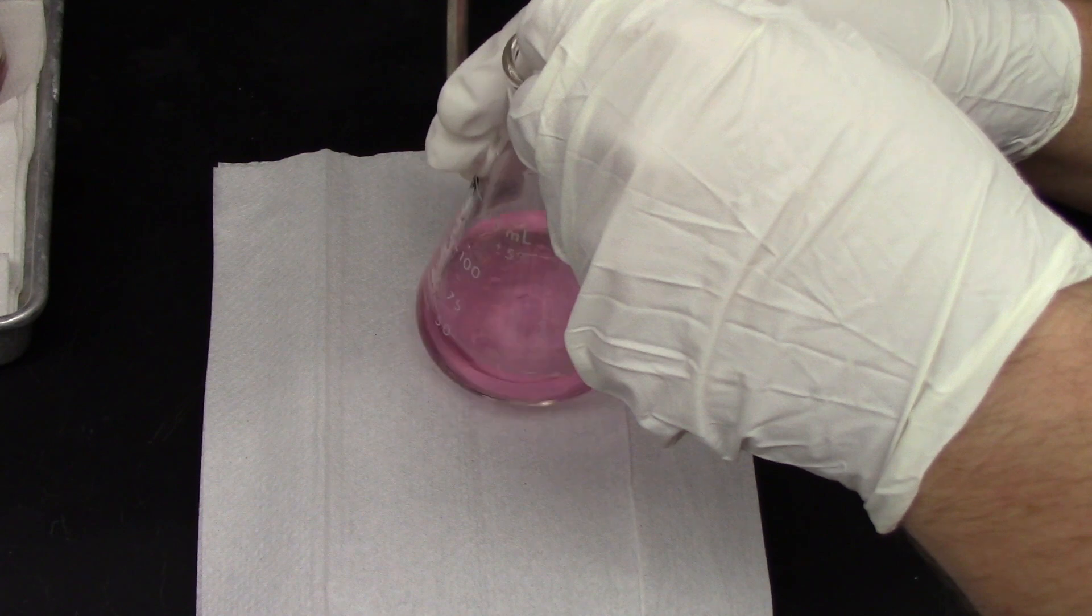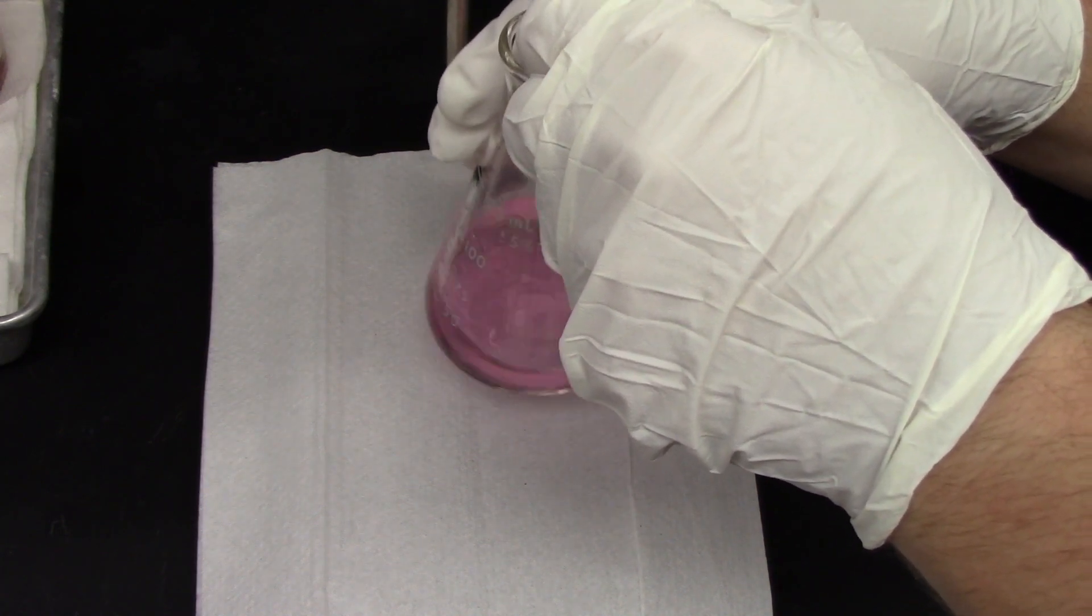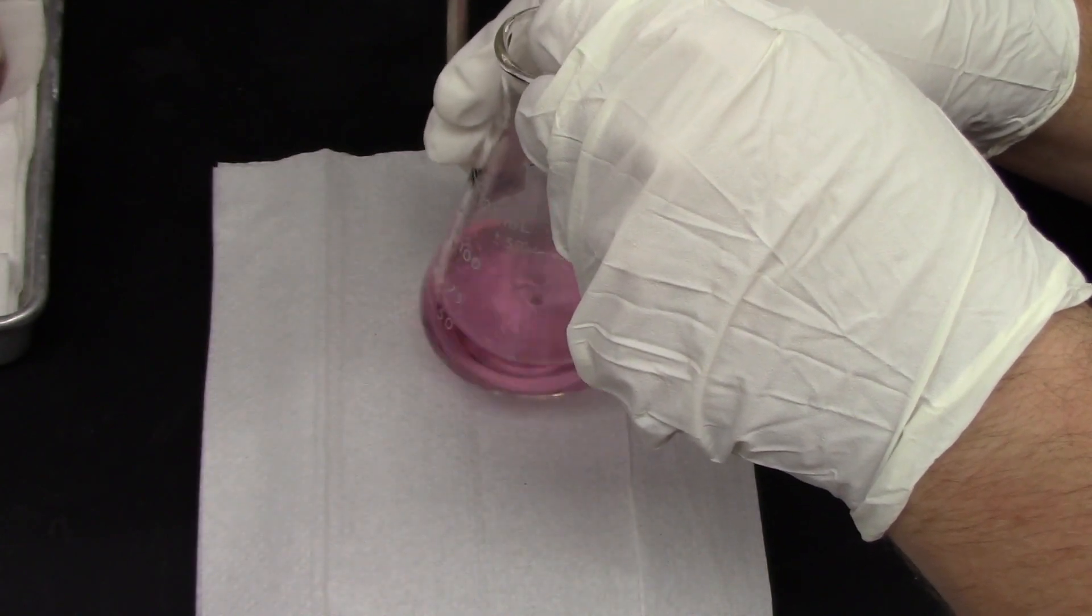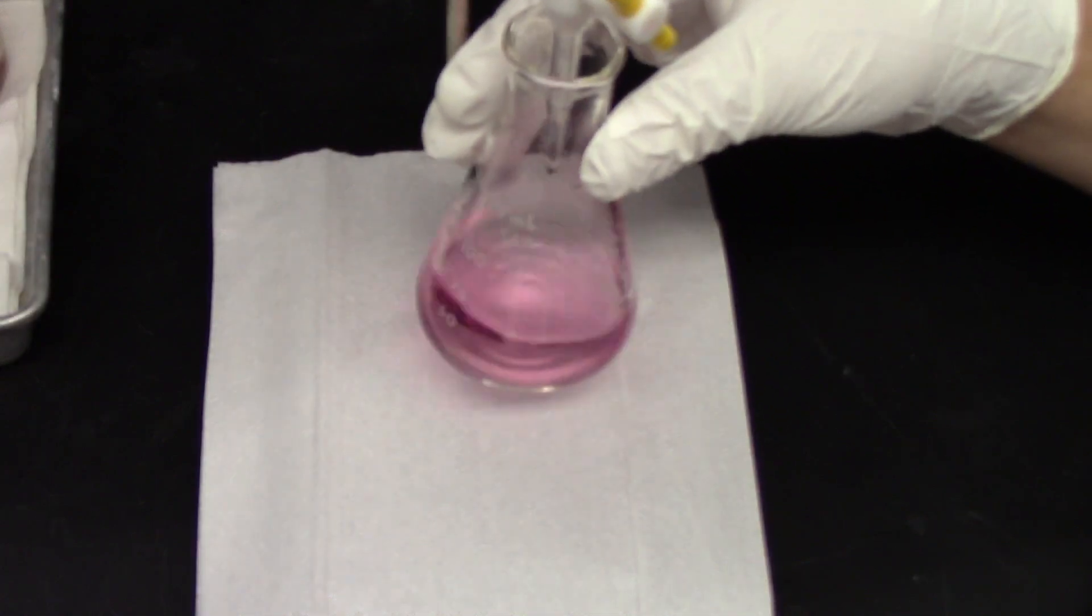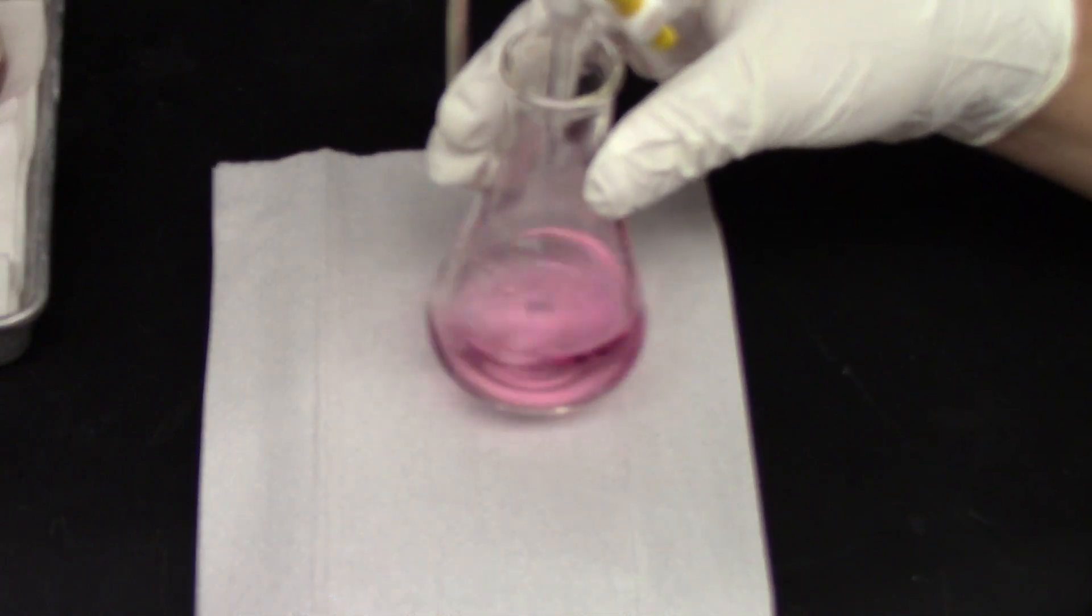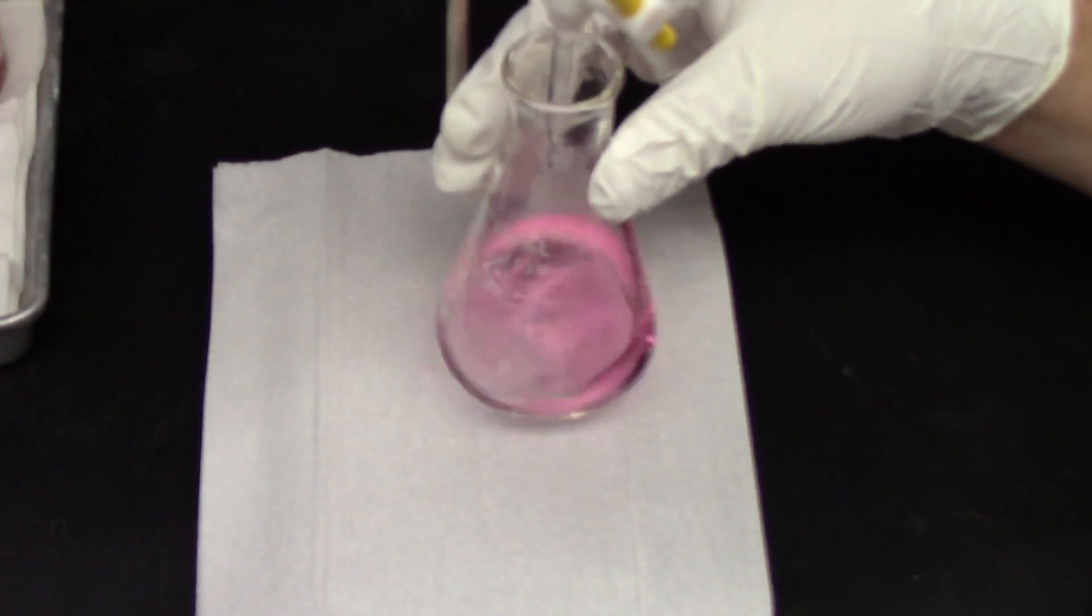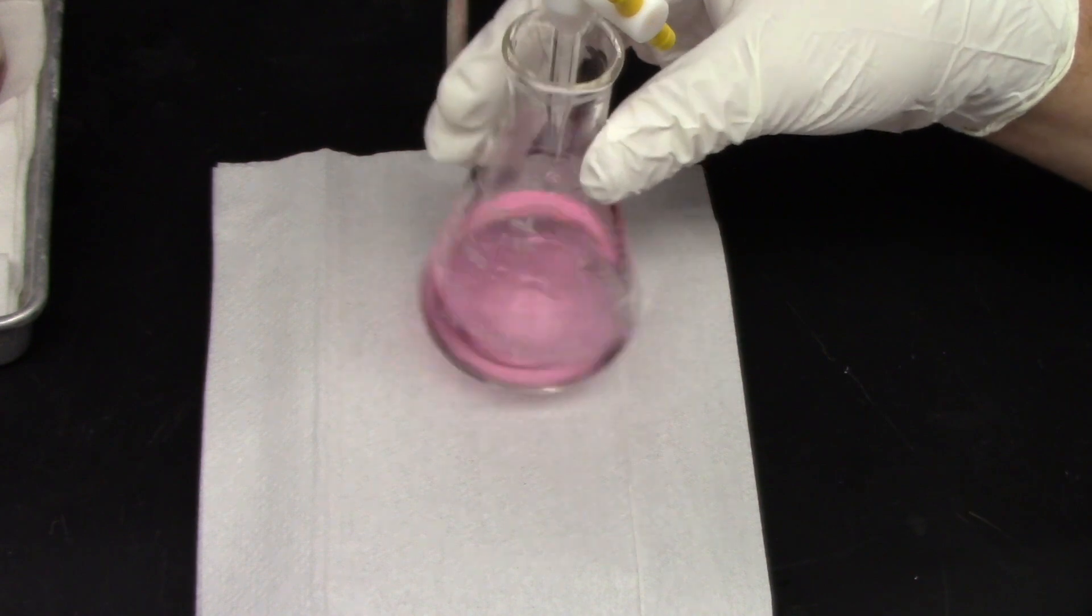You don't want it to go too fast because you want to be able to catch the equivalence point or the end point. The end point is where the solution changes color. So here we go. We're just dropping the base now. So the base is just dropping in, drop by drop. This might take a little while, so be patient. Continue swirling the flask. Make sure you get good homogeneous mixing, and be prepared to turn off the stopcock as soon as the solution turns to a yellow color.